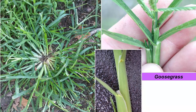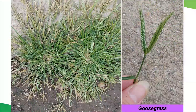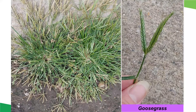Goosegrass is a summer annual that germinates after crabgrass by about two weeks as it needs higher soil temperatures. It is a coarse, bunch-type grass with a silver or white flat center. The leaves are dark green and folded in the bud. The collar is broad and sparsely hairy, and the ligule is membranous. Goosegrass survives well in compacted soil because its roots are more tolerant of low oxygen levels than our cool-season turfgrasses. It is often found next to sidewalks or driveways where traffic has spilled over. Core aeration can be used to alleviate compaction. The flowers are finger-like spikes and each spikelet seed head is zipper-like with two rows of seeds.